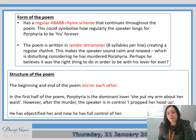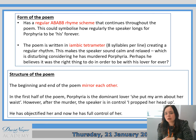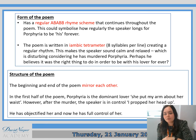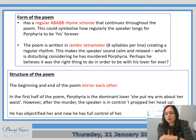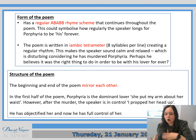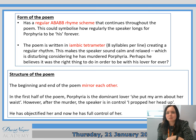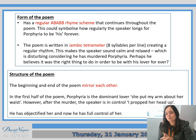You can also think about the regular rhyme scheme, which continues throughout the poem. It could symbolise how regularly the speaker longs for Porphyria to be his forever. And obviously we have spoken about the regular rhythm — it's iambic tetrameter. It's the way that he sounds so calm and relaxed, which is quite disturbing considering that he's murdering Porphyria. So maybe he believes it's the right thing to do to be with his lover forever.